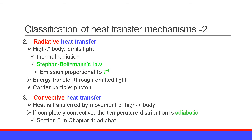The second heat transfer mechanism is radiative heat transfer. As you know, high-temperature bodies emit light, which is referred to as thermal radiation. Thermal radiation follows Stefan-Boltzmann's law, where the emitted energy of the light is proportional to the fourth power of temperature. The radiative heat transfer is energy transfer through emitted light. The carrier particle of the radiative heat transfer is the photon.